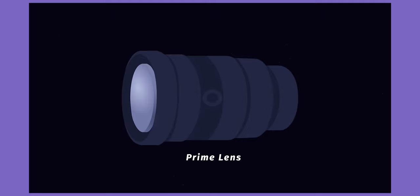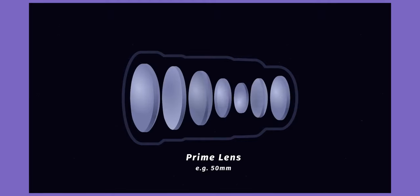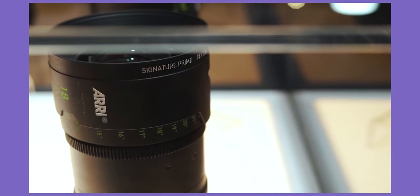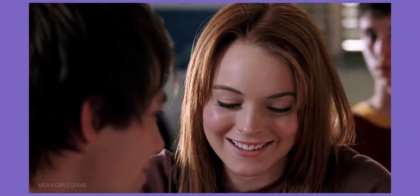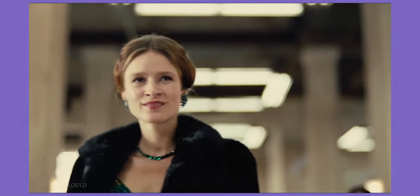In film and photography, a prime lens is a lens with a fixed focal length, typically with a maximum aperture from f2.8 to f1.2. In simple terms, prime lenses don't allow you to zoom in or out, giving the shooter a much, much shallower depth of field.